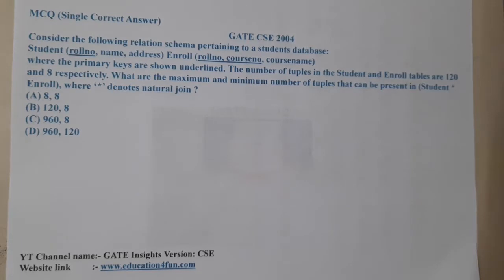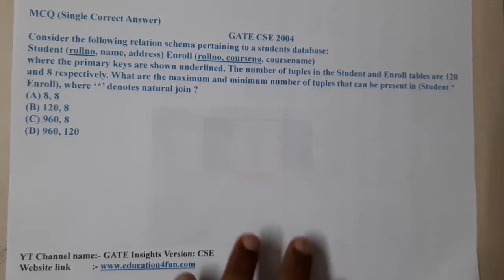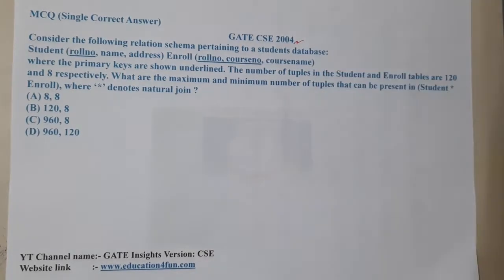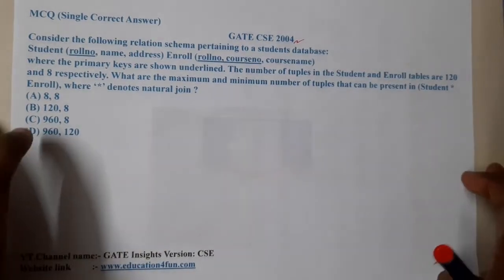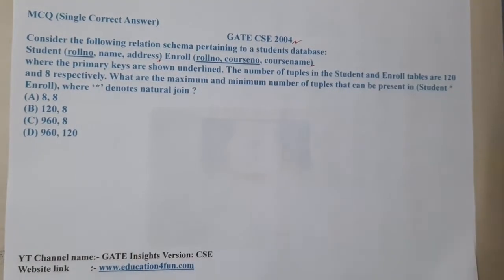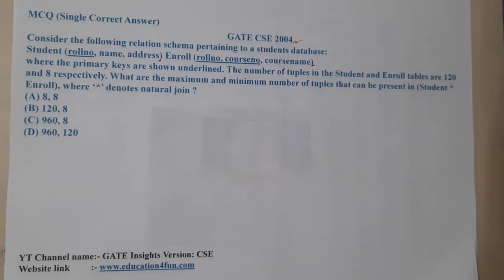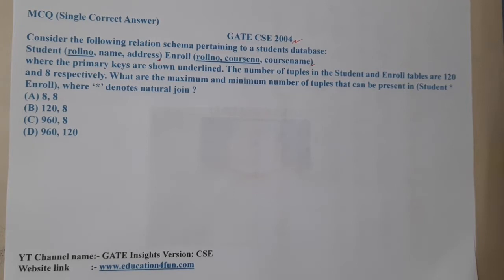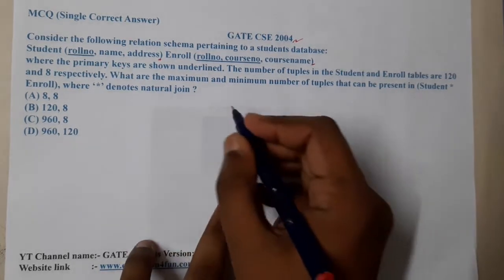Hello guys, we are back with our next lecture. This question belongs to GATE CSE 2004. The given question asks us to consider the following relational schema — they have two tables: Student and Enrollment. In Student, role number is the primary key, and in Enrollment, role number with course ID is the primary key, as shown with underline.